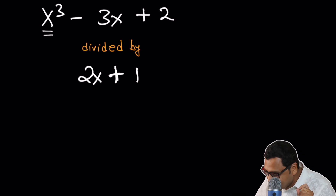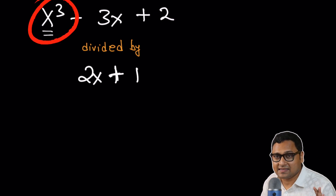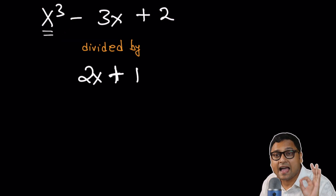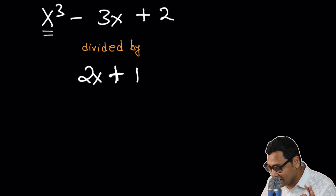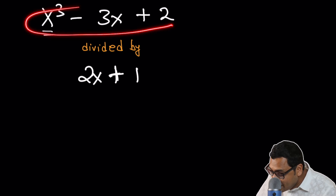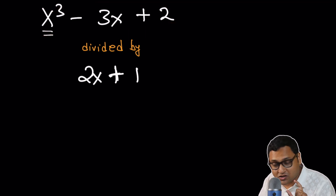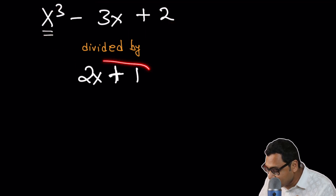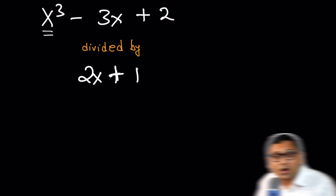The problem says: for what values of x, where x is an integer, is the expression x³ - 3x + 2 divisible by 2x + 1?